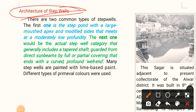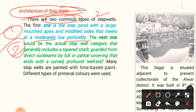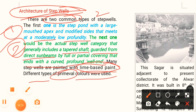There are two common types of step wells. The first is a step well with a large mouth, apex, and modified sites that meet at the modality and profundity. The second type is the actual step well category that generally includes a tapered shaft guarded from direct sunbeams by full or partial covering, ending with a curved or deep well. Many step wells are painted with lime-based paint, and different types of premium wall colors are also used.